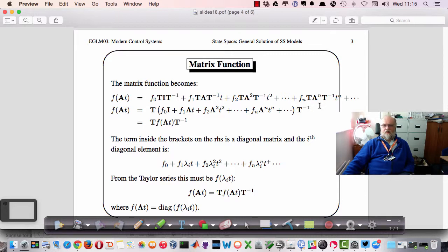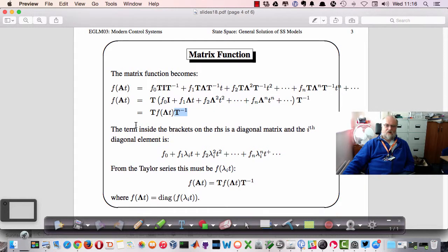So the T and the T inverse can be taken outside the expression, and we're left with T times f of lambda t T inverse inside the brackets. So if we know what the expansion is for the function defined in terms of the eigenvalues, we can compute the function for any generalized A matrix. If we know A and the eigenvalue matrix and use the eigenvector matrix and its inverse, we can compute any function as a Taylor series expansion.